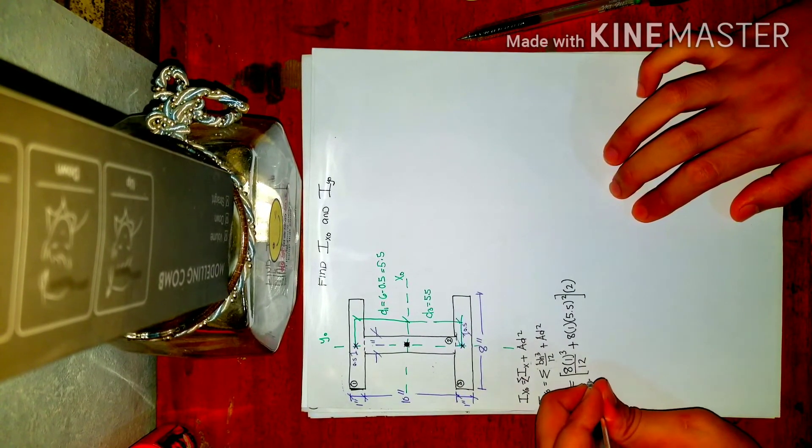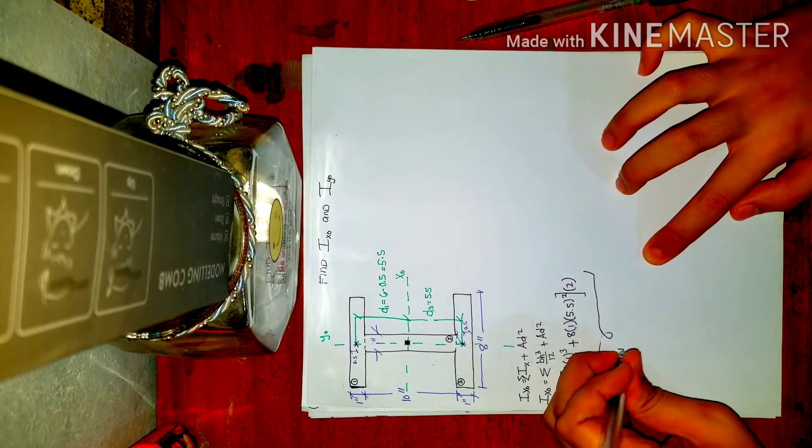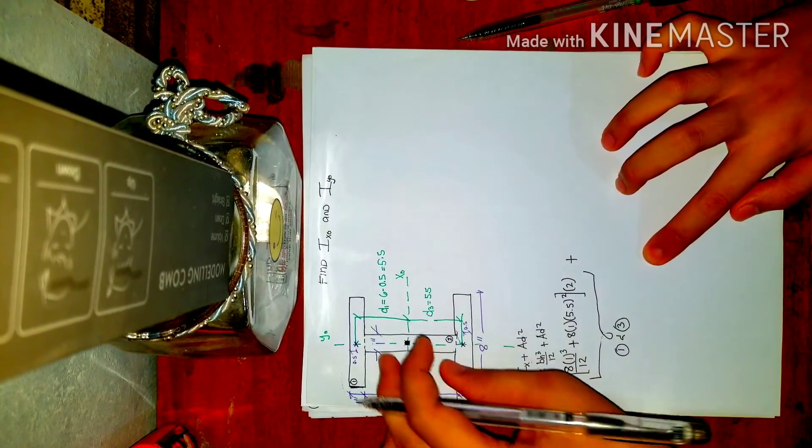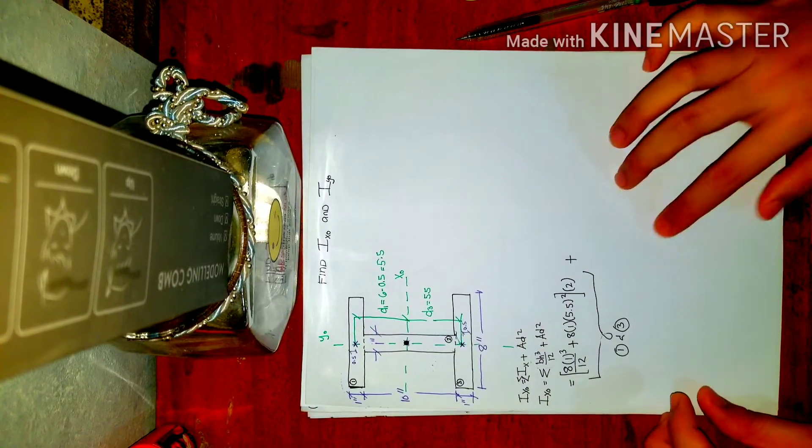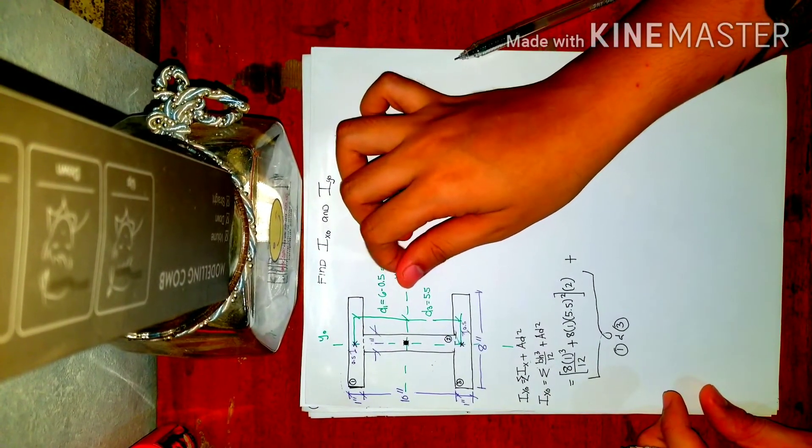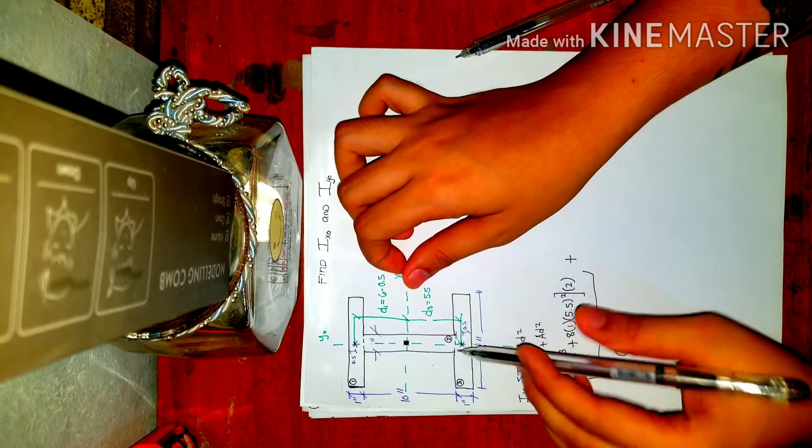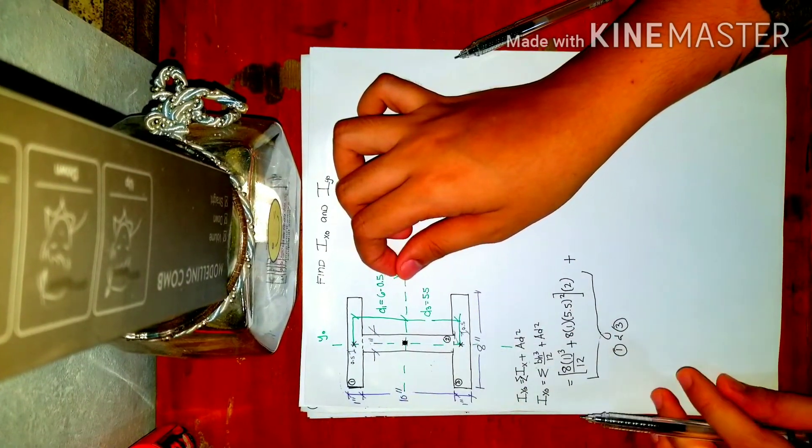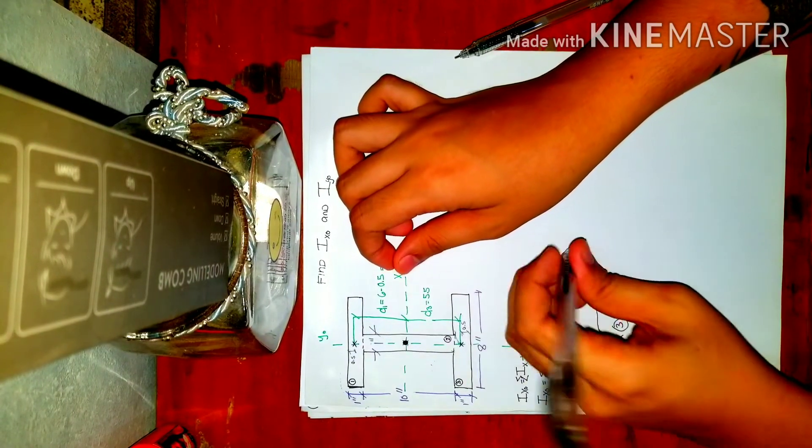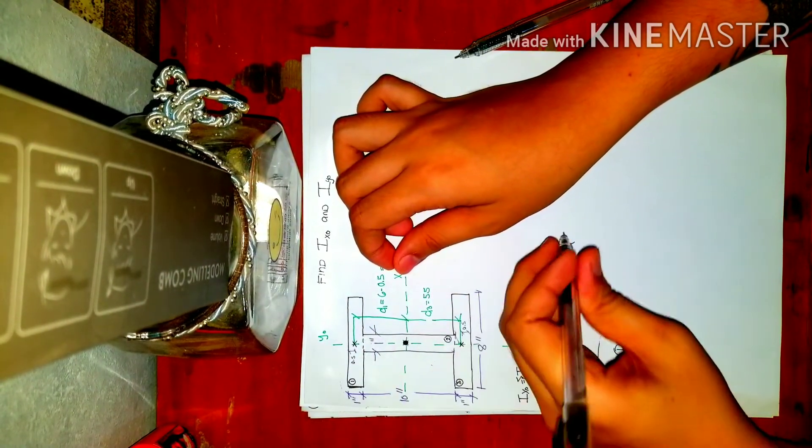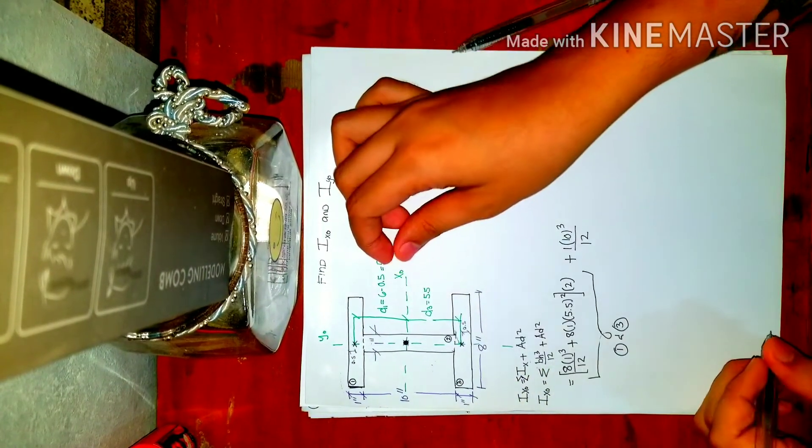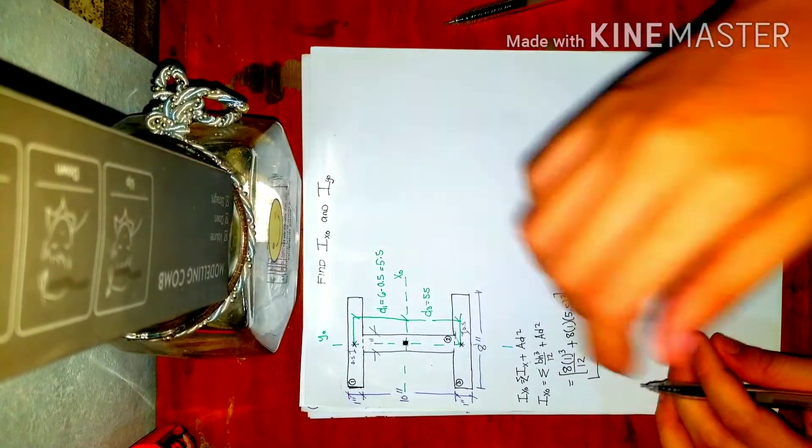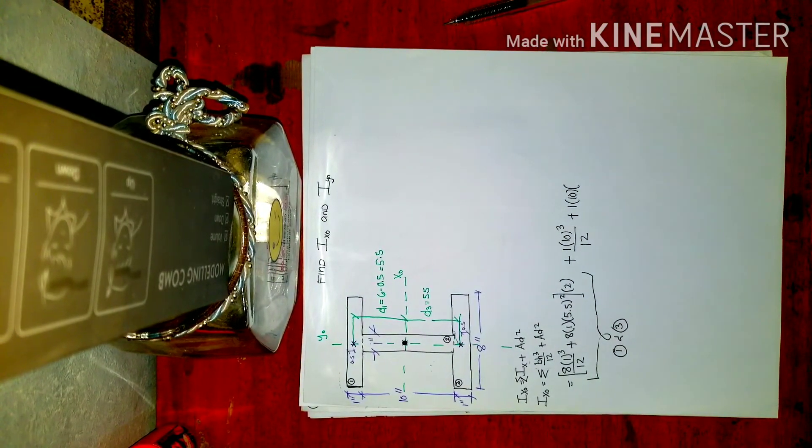Okay, so this is for area 1 and 3 rectangles. Next, for the middle part, for the web. Again, hold the x-axis, x-sub-o axis to know which is the base and which is the h. So again, your base is the parallel dimension to the axis you're considering. So for this web, what is your base? That is 1. So 1 multiplied by the height, so 10 cubed over 12. And then plus area, so 1 times 10, and then d. So what is d? Correct.